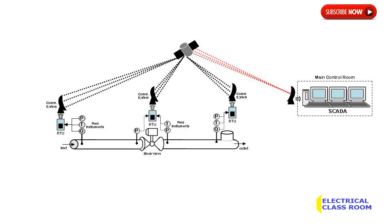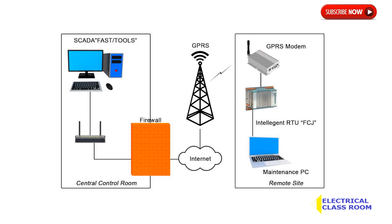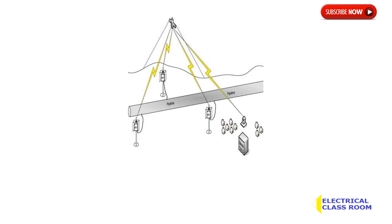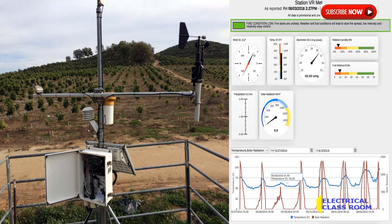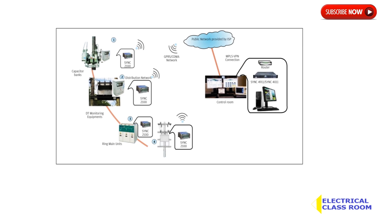RTUs are normally used in unmanned remote stations for controlling field equipment. Normally, wireless communication is set up with the master control system. RTUs have a variety of applications including monitoring of oil and gas pipelines, environmental monitoring, and monitoring and control of electrical transmission networks and associated equipment.